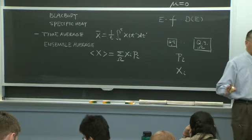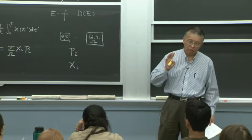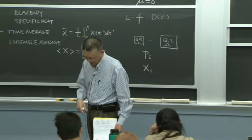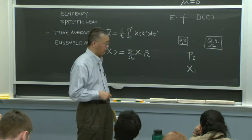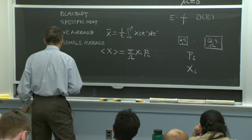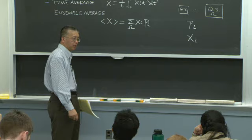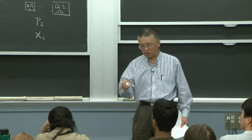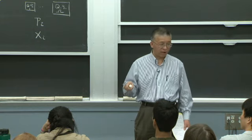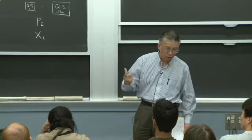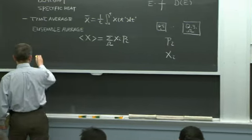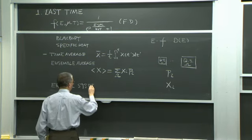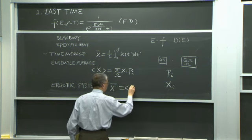There is a time average, and the ensemble average. A very fundamental assumption is that when these two different ways of averaging are equal to each other, the system is called ergodic. Most systems are ergodic. Studying non-ergodic systems is actually an active branch of statistical physics. An ergodic system is one that, after some time, tends to equilibrium and samples all the states.